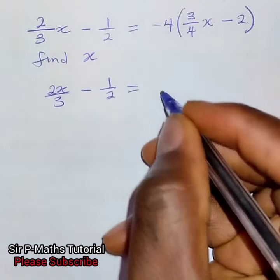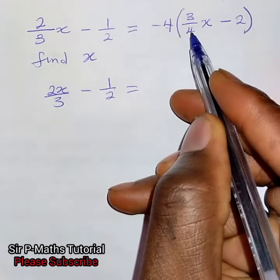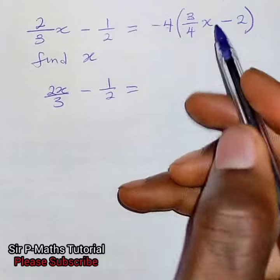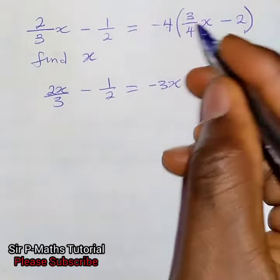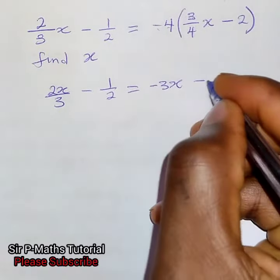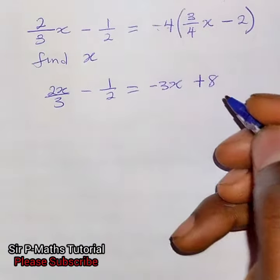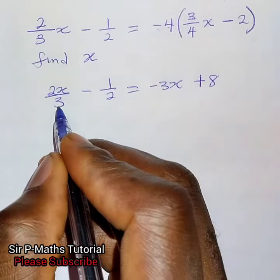Equal to minus 4 can be divided by minus 4 to give minus 1 times 3, I'll have minus 3x. Record this x, then minus 4 multiply minus 2 will give me positive 8. Then find the LCM of the denominator.